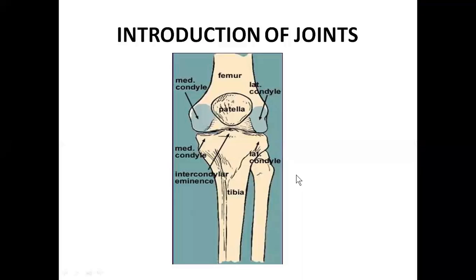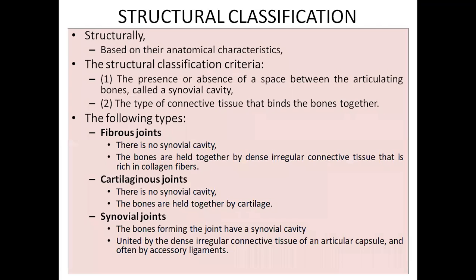This is about the joint. We already seen what is exactly the function of the joint in our body. Now we're going to see the classification of joints. There are two types of classification: one is called structural classification, and another one is called functional classification.